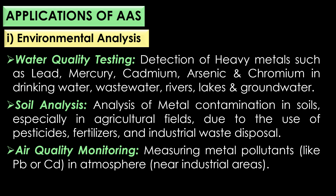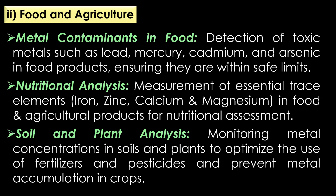In soil analysis, AAS is used for the analysis of metal concentration or metal contamination in soils, especially in agricultural fields due to the use of pesticides, fertilizers, and industrial waste disposal. In air quality monitoring, atomic absorption spectroscopy is very helpful in measuring the metal pollutants like lead or cadmium in the atmosphere near industrial areas.